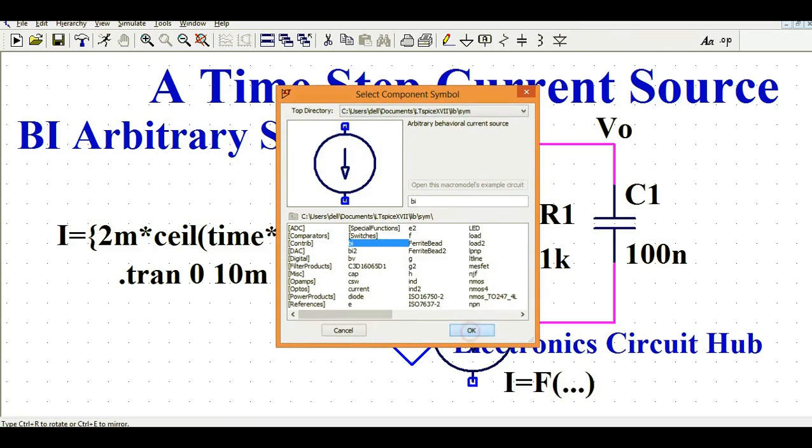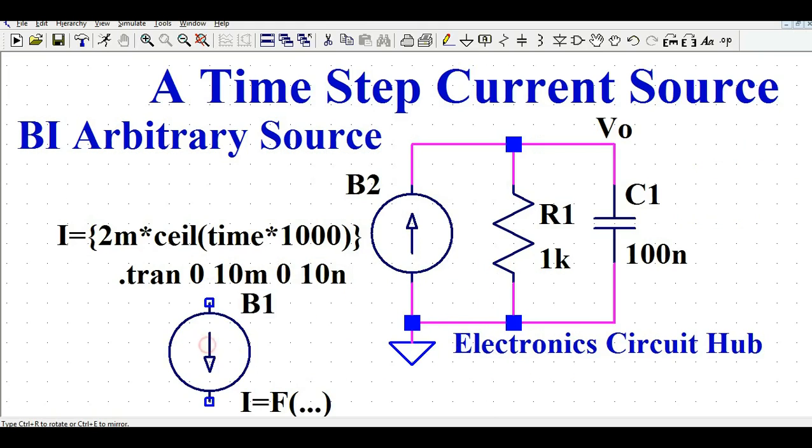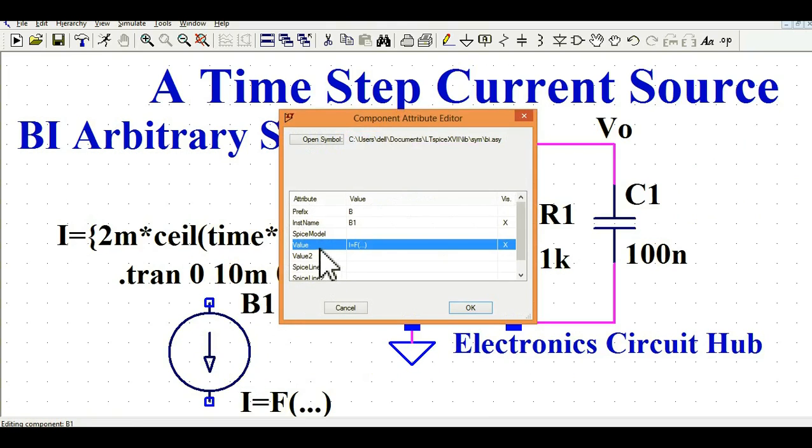If you click on here and if you want to see, let me show you. So what is this? This is basically a current source where you can define, if you see value type here, I equals to function of something.